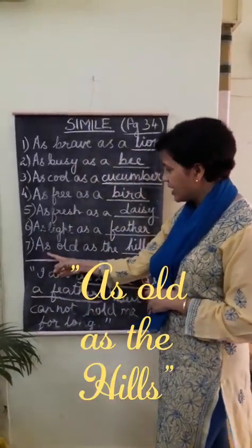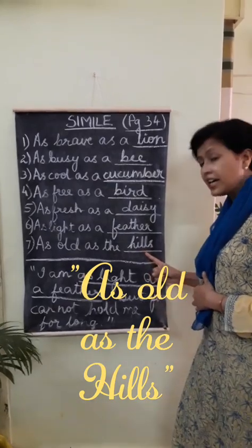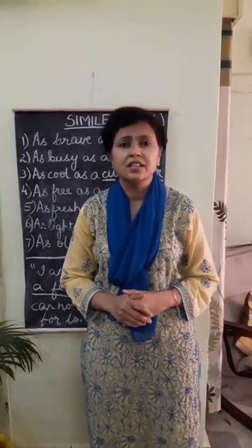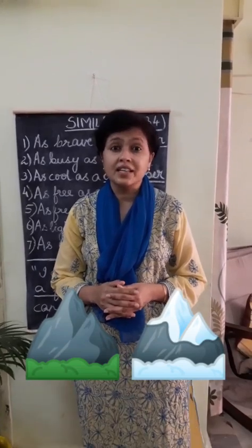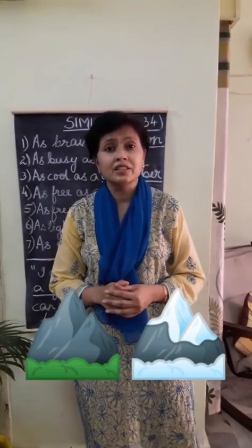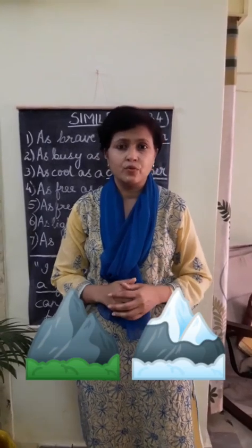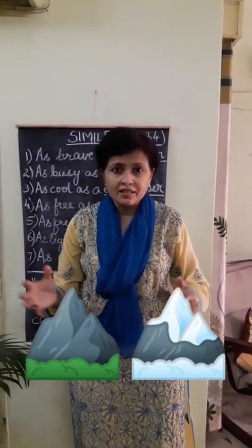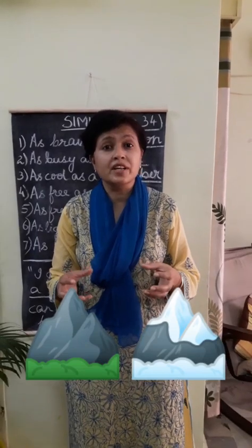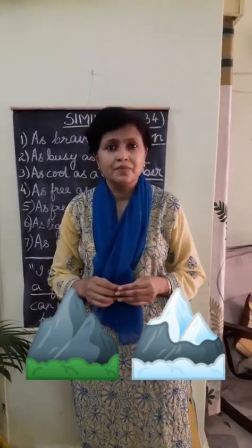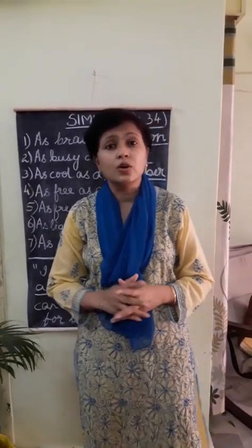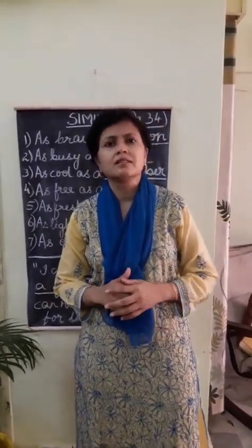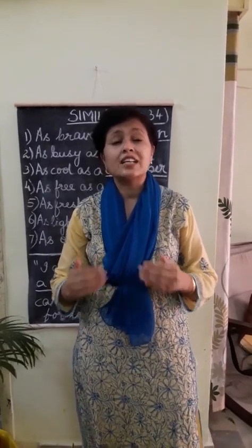Number 7: as old as the hills. We say 'as old as the hills' because hills have taken a very long time to build up. Hills have been here for hundreds and thousands of years — they were there when the earth was formed. Due to different changes in weather conditions, the hills were formed, long before any human being was alive. So that is why we say as old as the hills.